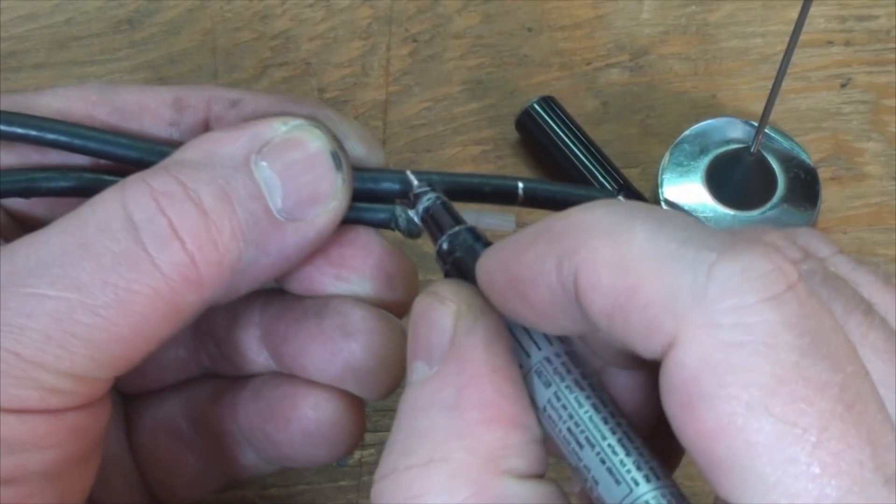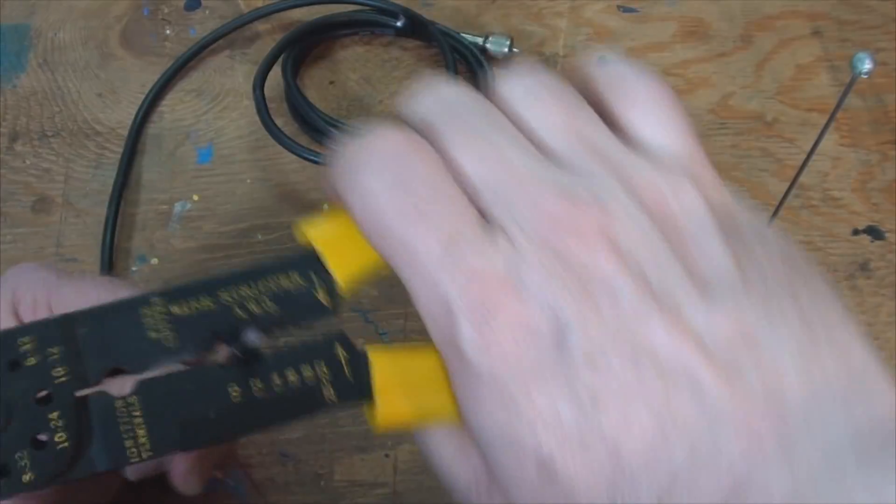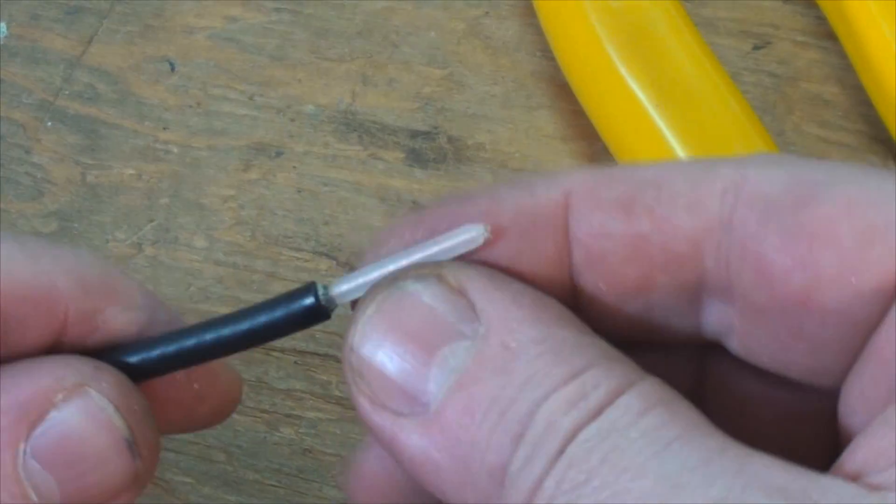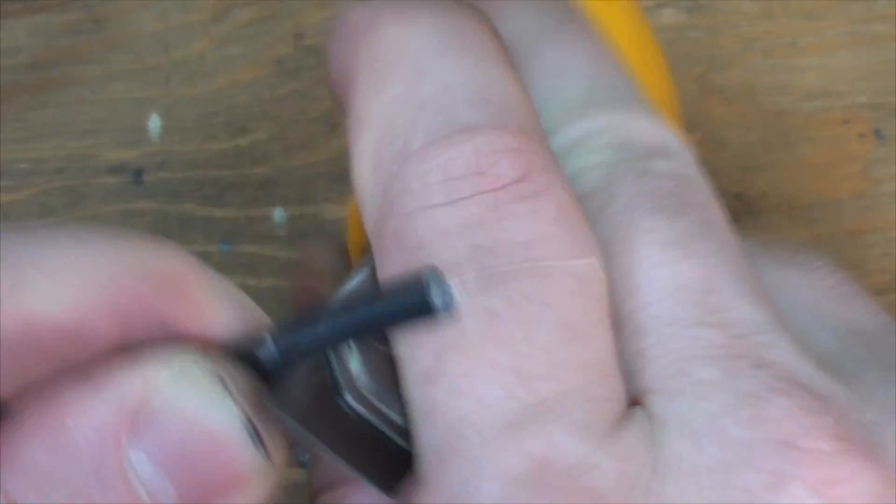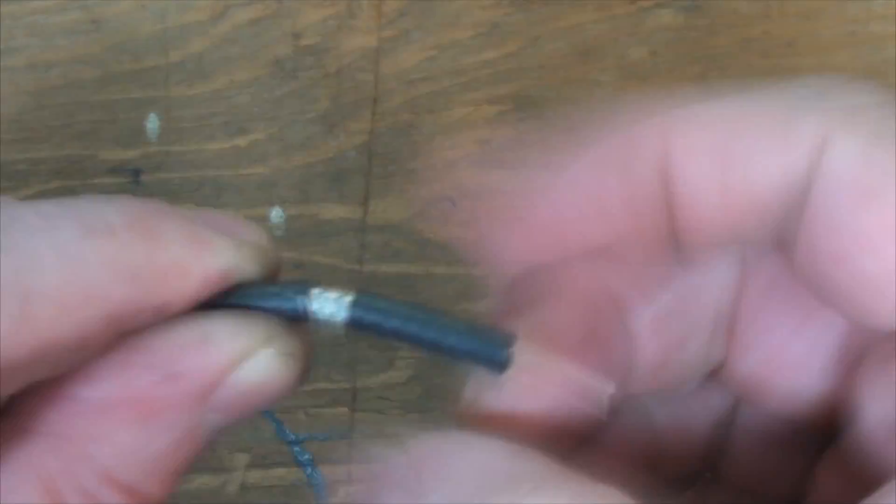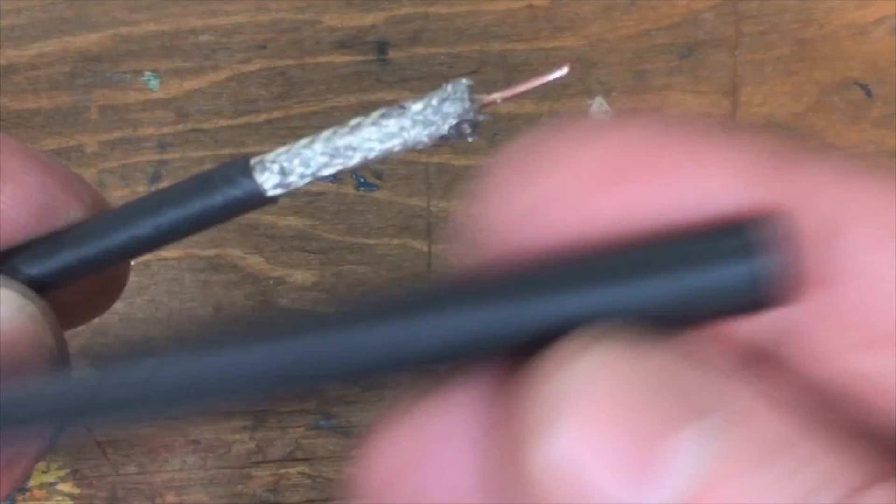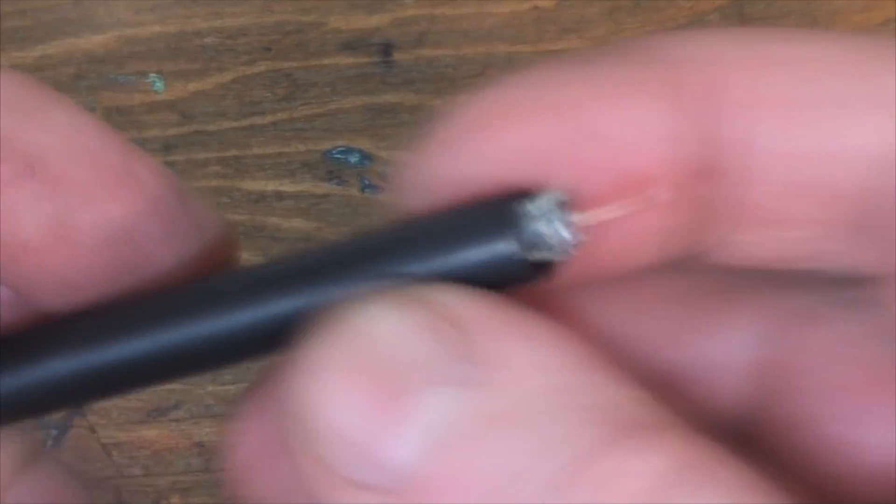So I marked the wire for the core and the shield just the same as the old wire. Once the end is prepped you want to slip on a shrink tube.